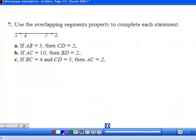Looking at an example using the overlapping segment property to complete each statement: If AB is 3, then what is CD? Well, these both have two tick marks meaning they're congruent, so this would also be 3. If AC is 10...